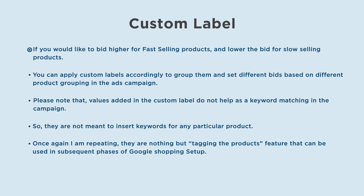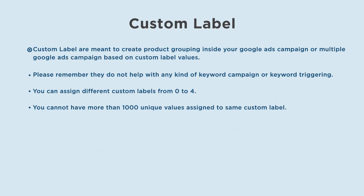Here are a few examples of product grouping. For example, if you would like to bid higher for fast-selling products and lower the bid for slow-selling products, you can apply custom labels accordingly to group them and set different bids based on different product groupings in the ads campaign. Please note that values added in the custom label do not help as keyword matching in the campaign, so they are not meant to insert keywords for any particular product. They are nothing but a tagging feature for products that can be used in subsequent phases of Google Shopping setup.